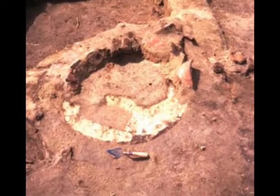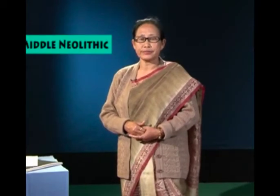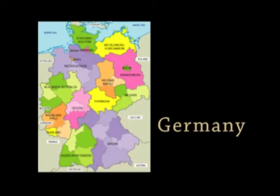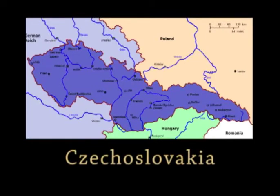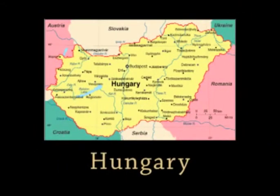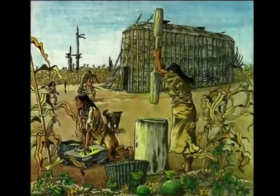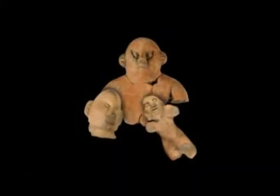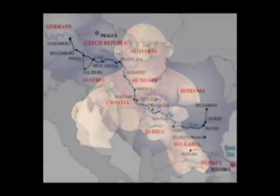Around 5,500 BC, the Danubian river banks and the loess zones of Germany, Czechoslovakia, Austria, and Hungary were occupied by a new farming population. Here they developed distinct cultural features and are commonly referred to as Danubian culture.